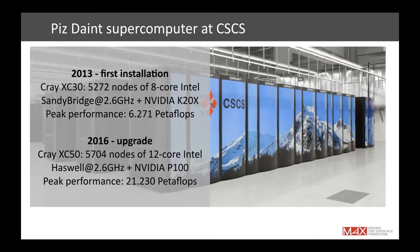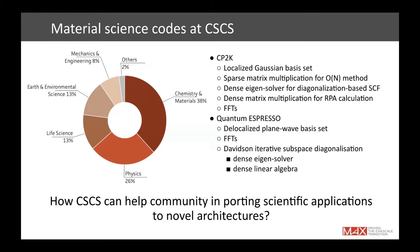The first version of Piz Daint was delivered in 2013 as a Cray CS30 system with 5000+ nodes equipped with NVIDIA K20X. In 2016 we upgraded it to Haswell and NVIDIA P100 GPU cards. Looking at our user communities, chemistry and materials science take about 38% of all jobs run at Piz Daint, and a large proportion of those are CP2K and Quantum ESPRESSO.